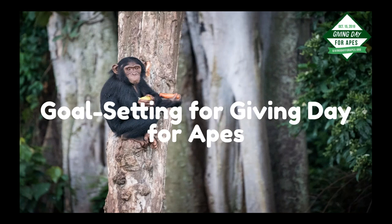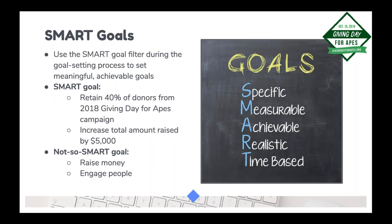Back to Linda. Before we circle back to prize strategy, I want to talk about goal setting, because setting strong goals is really the first step in developing a good campaign strategy. The concept of SMART goals is something many of you are familiar with — SMART stands for Specific, Measurable, Achievable, Realistic, and Time-based. An example of a smart goal would be to retain 40% of your donors from your 2018 Giving Day for Apes campaign — that's specific and measurable. A not-so-smart goal would be just 'raise money,' because that's not specific or measurable.